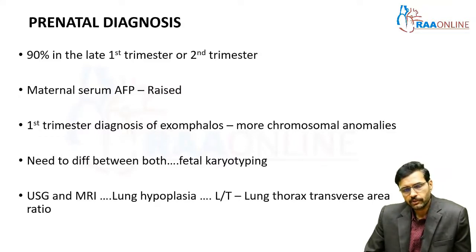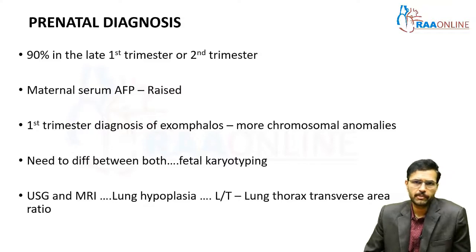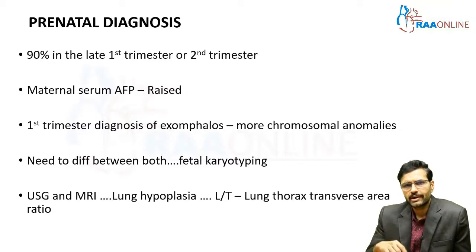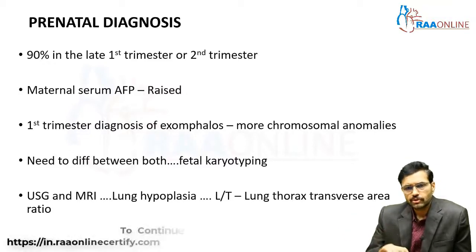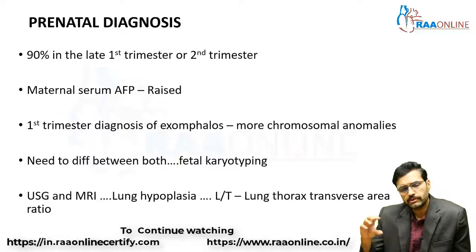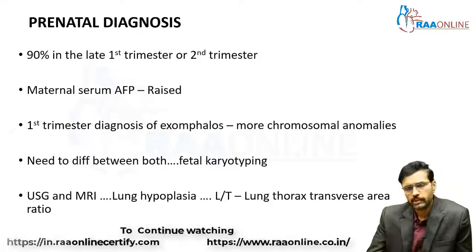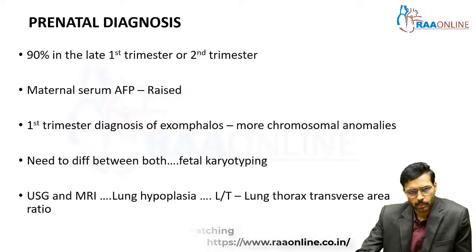An ultrasound of fetal sonography or an MRI of the mother can give us an idea regarding the presence of lung hypoplasia. Lung hypoplasia can be very easily detected by using what is called the LT ratio — the lung thoracic transverse area ratio — which gives us an idea regarding whether the lung is hypoplastic or normal.